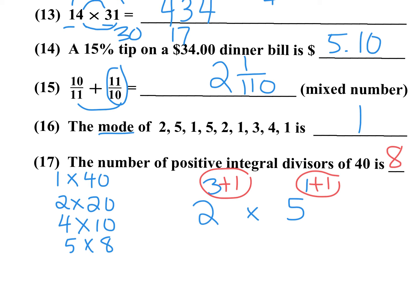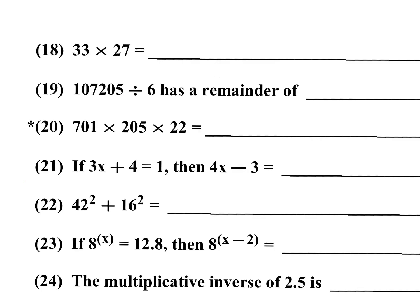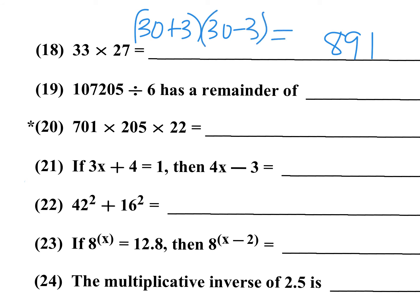Number 18: 33 times 27. I see (30 + 3) times (30 − 3), which is 30 squared minus 9. 900 minus 9 is 891. The outer and inner terms cancel, leaving 900 minus 9 equals 891.